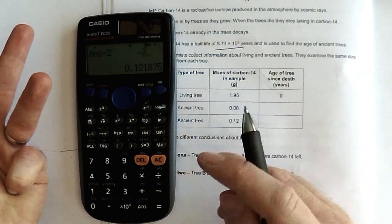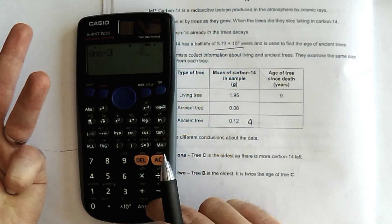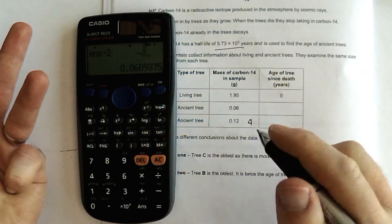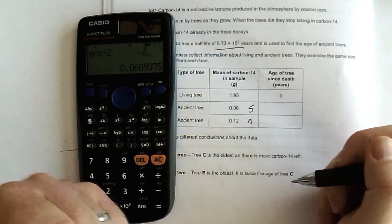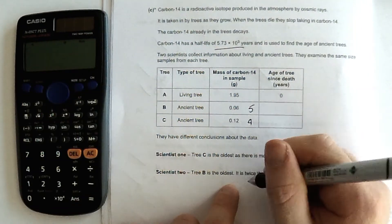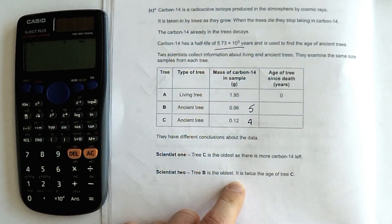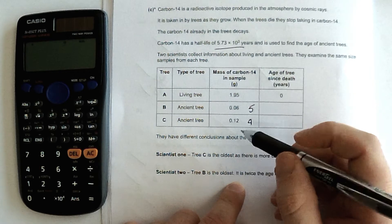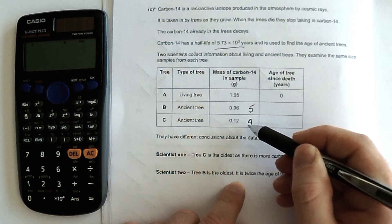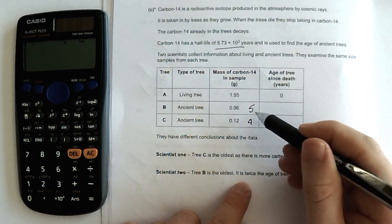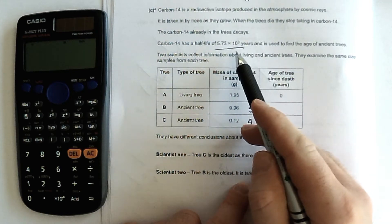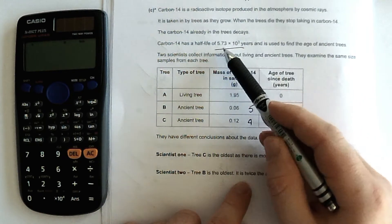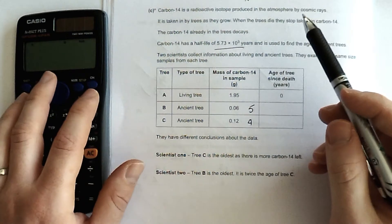And to get to the next tree, then you can see it's one more half-life has passed. So already I'm starting to think that one of these guys, or neither of these guys, are fully right. But this is definitely not the oldest. This is the oldest. And it's not twice the age. It's just that it's been dead for this much longer. One more half-life.